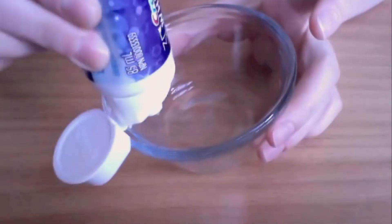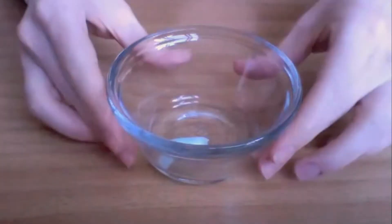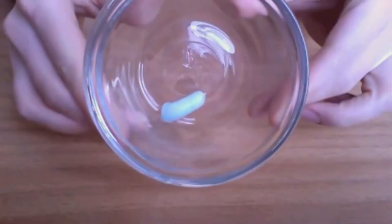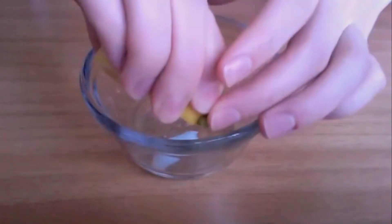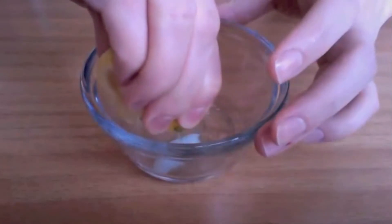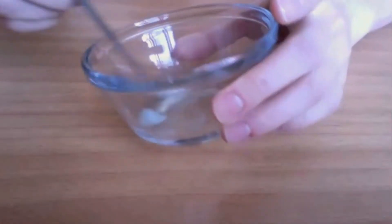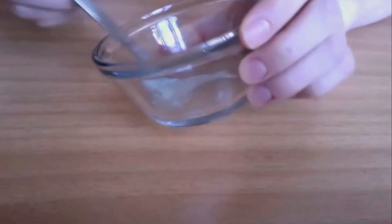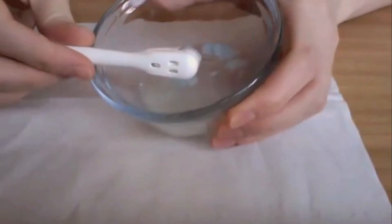Start by squeezing a dab of toothpaste into the bowl—about this much, I'd say. Then squeeze the juice of a quarter of a lemon into the same bowl and mix the two ingredients together.